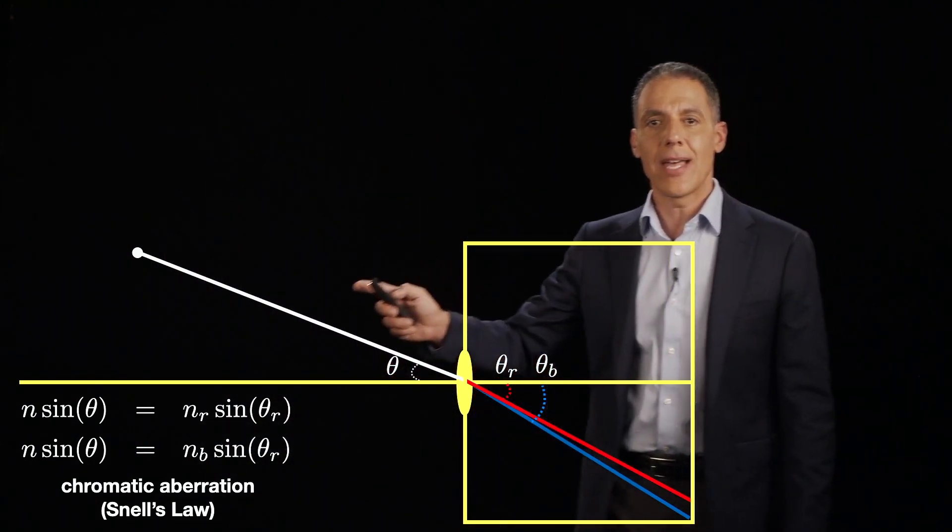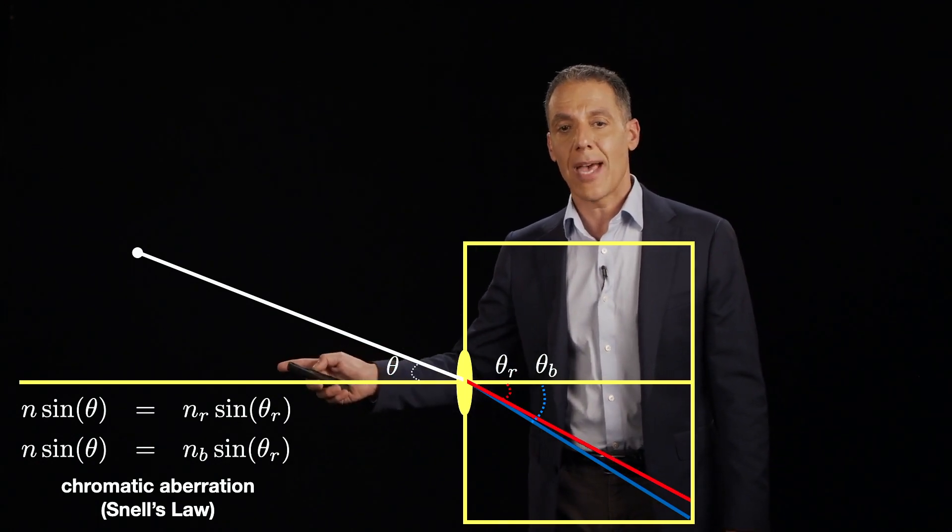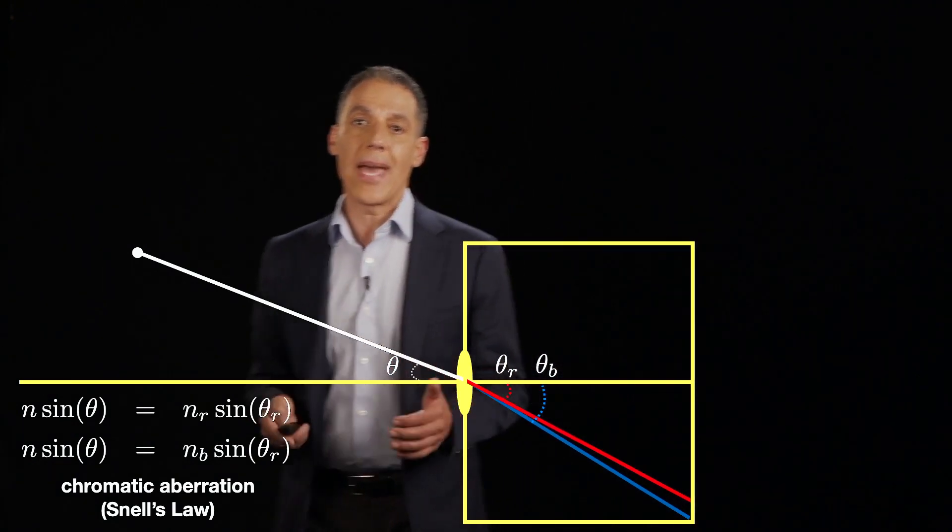And what you see here is that the index of refraction is different for the red and the blue, which means that when light enters in, it's going to bend differently.